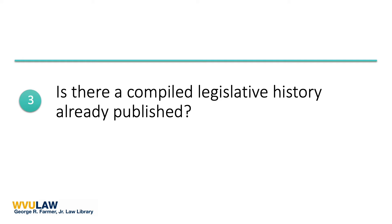This is most often done for major federal legislation and is referred to as a compiled legislative history. You will find these published in print multi-volume sets, online on HeinOnline, Westlaw Edge, or a platform called ProQuest Legislative Insight. Before you tackle a search for legislative history documents individually, search for an already compiled legislative history.